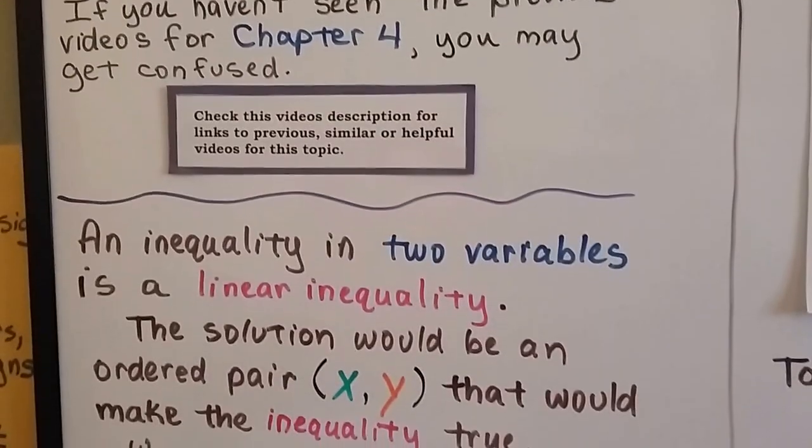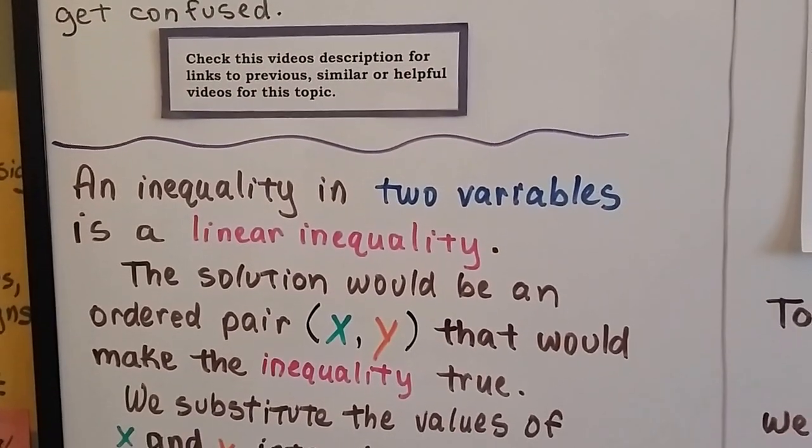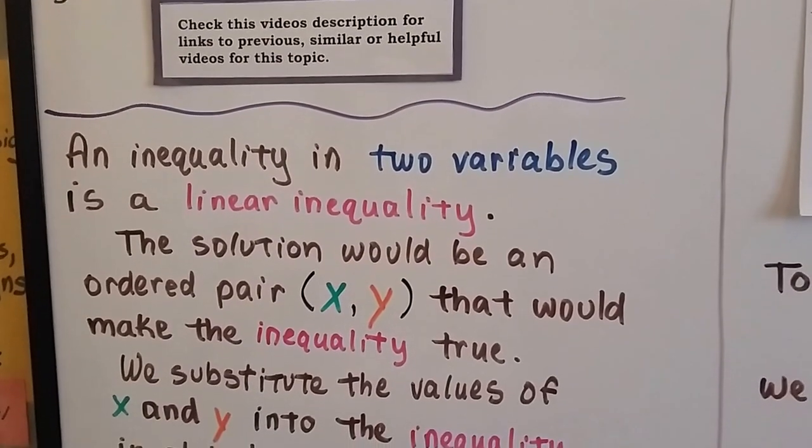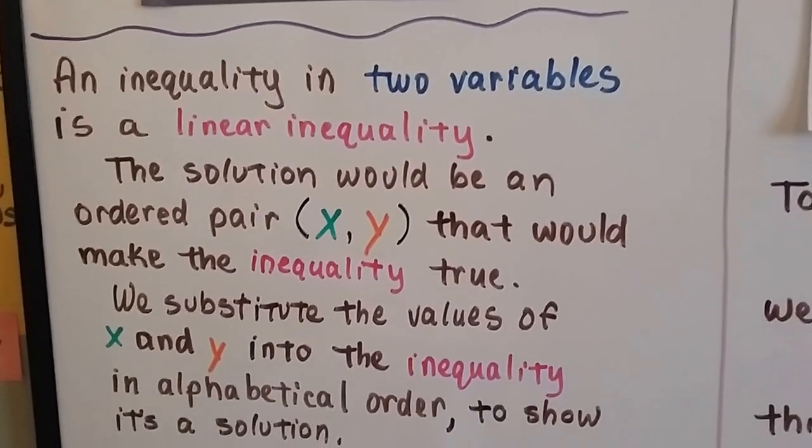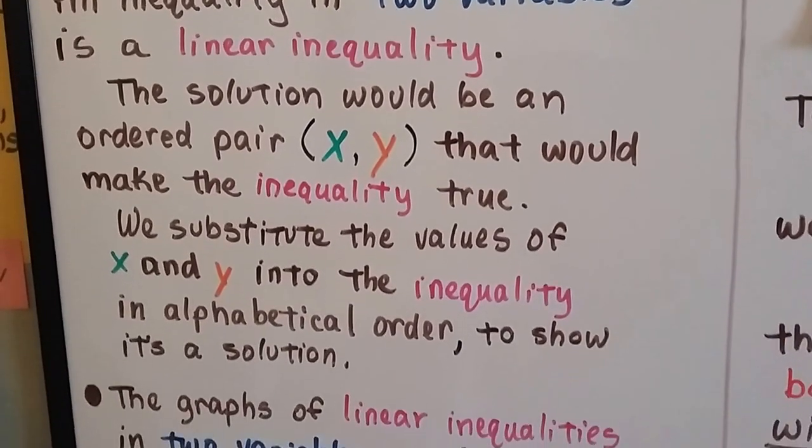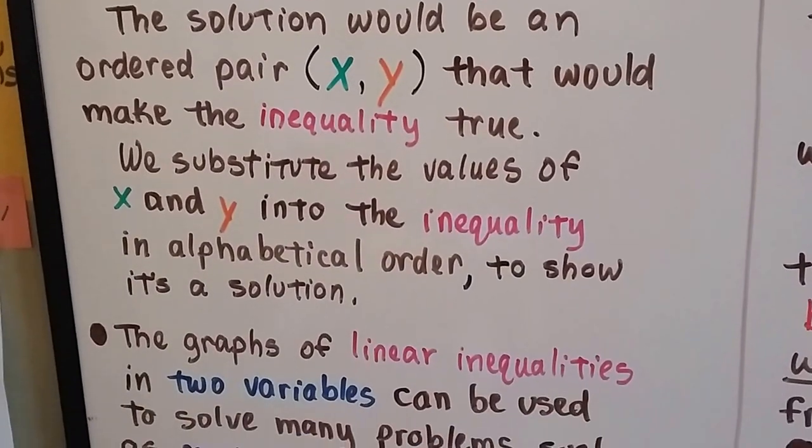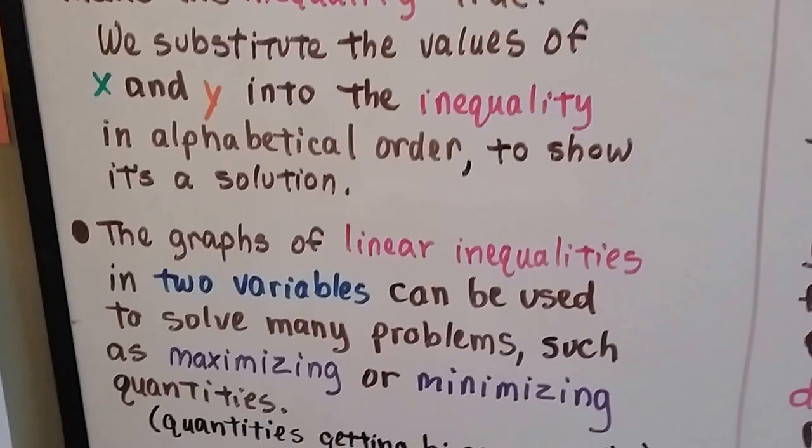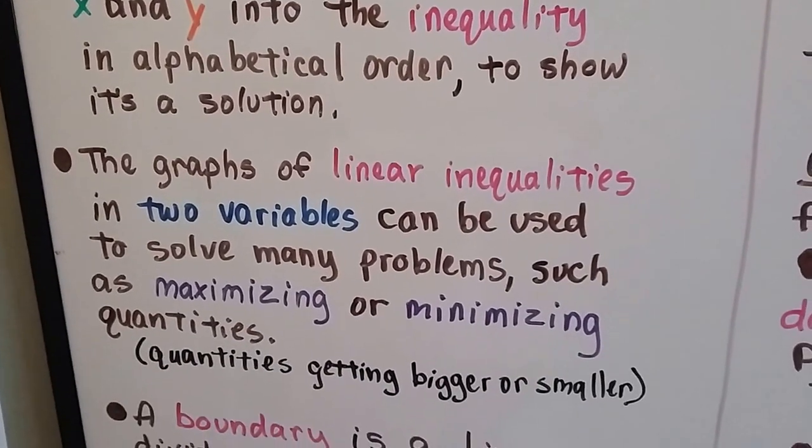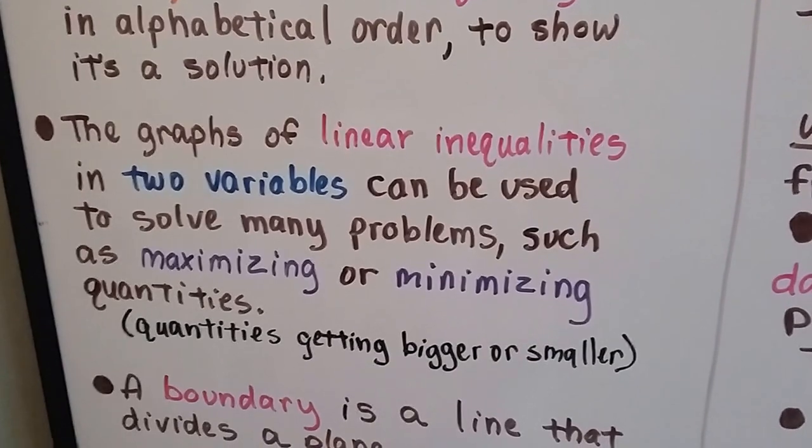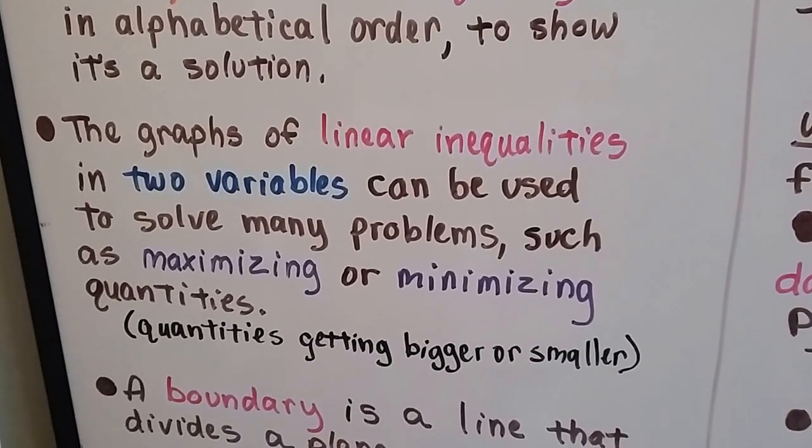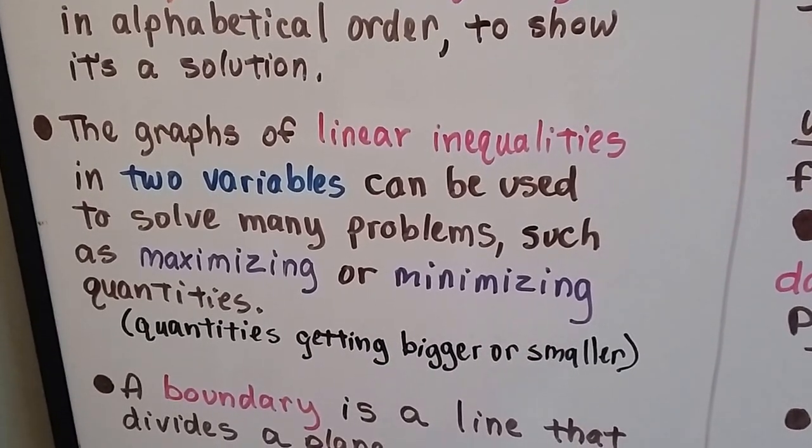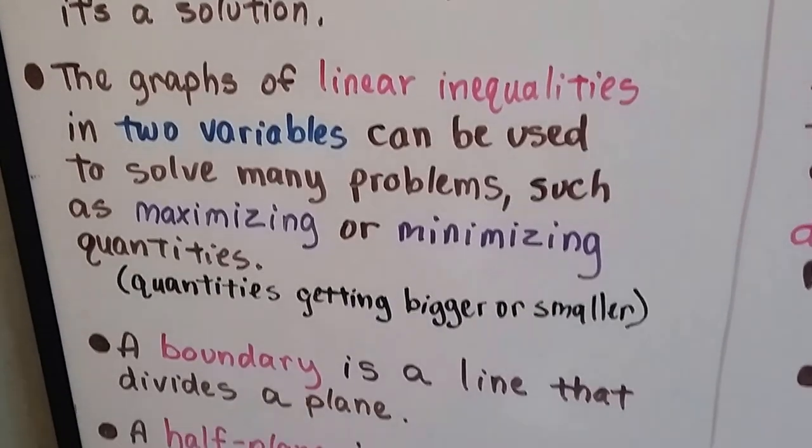An inequality in two variables is a linear inequality. The solution would be an ordered pair (x, y) that would make the inequality true. We substitute the values of x and y into the inequality in alphabetical order to show it's a solution. The graphs of linear inequalities in two variables can be used to solve many problems, such as maximizing or minimizing quantities. That's making the quantities get bigger or smaller.